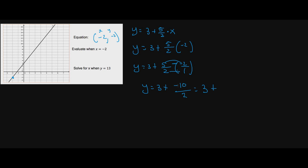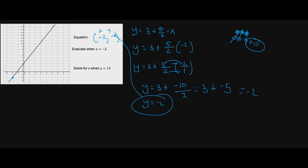So we have three plus negative ten over two. Negative ten divided by two is negative five. Now three plus negative five: three filled pebbles and five negatives — three positives cancel three negatives, leaving negative two. So y equals negative two, which is exactly what we saw on the graph.